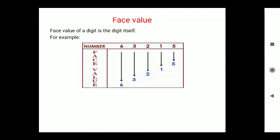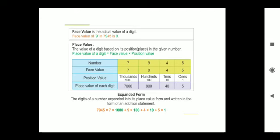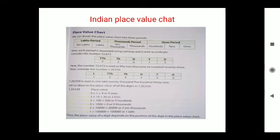What is expanded form? The digits of a number are expanded into its place value form and written as an addition statement. For example, seven thousand nine hundred forty-five in expanded form is 7000 + 900 + 40 + 5.